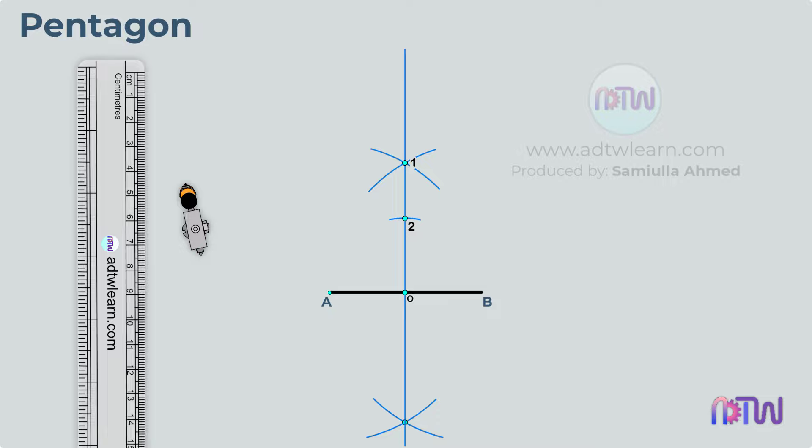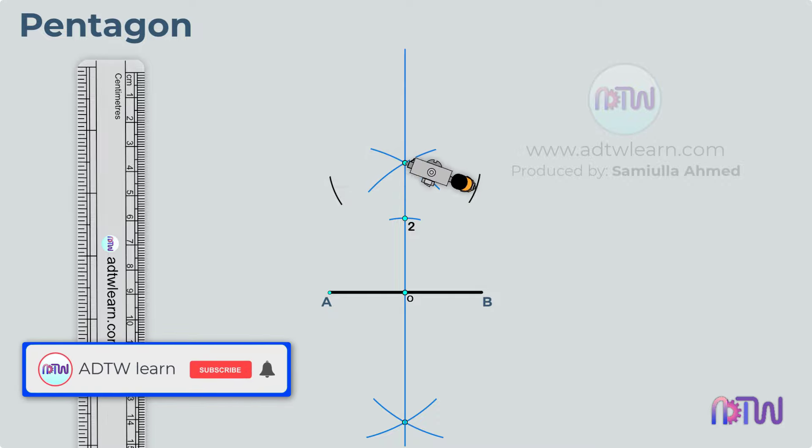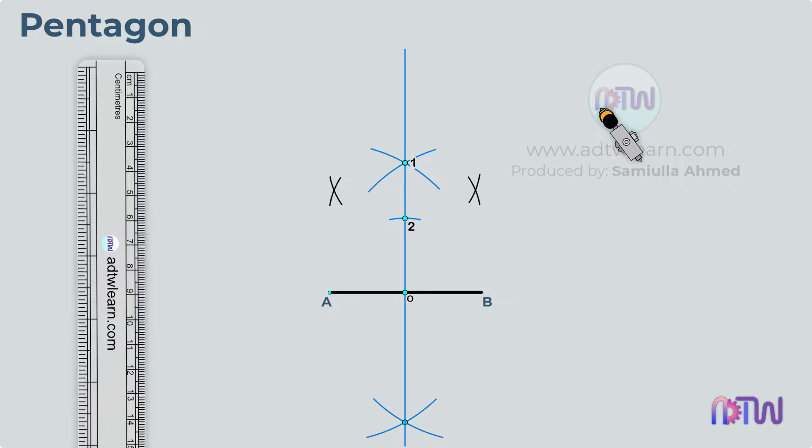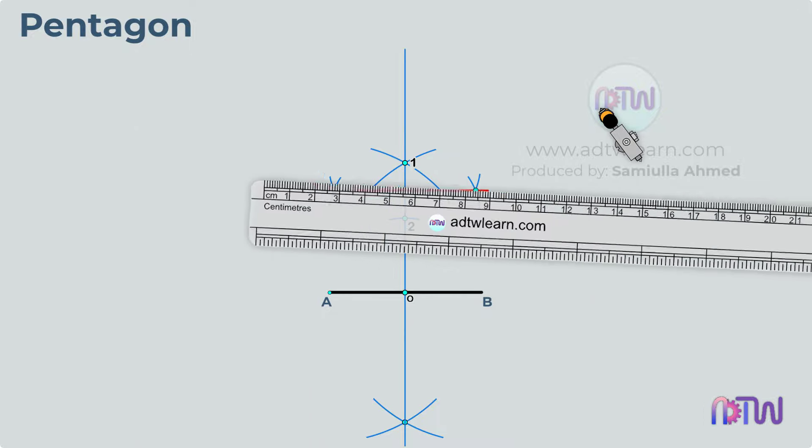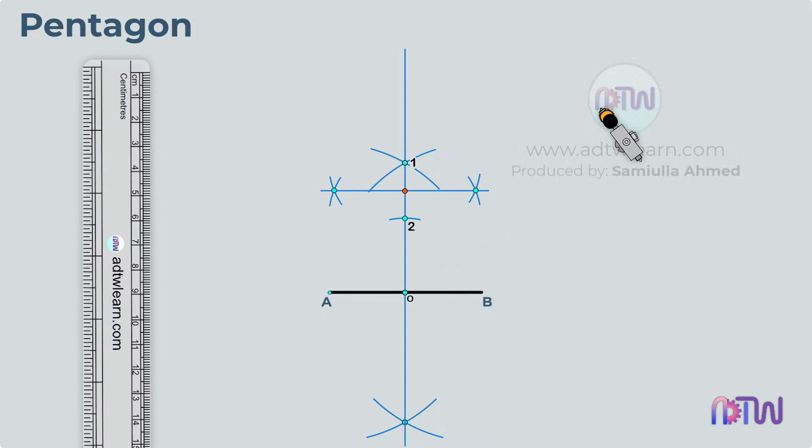Take a compass, take some length and cut arc by keeping at point 1 and 2. Draw a line passing through these points. This point will be our point number 3.